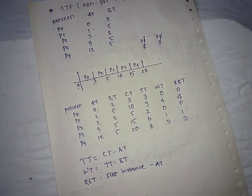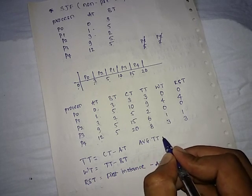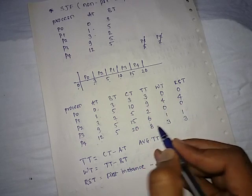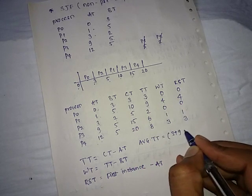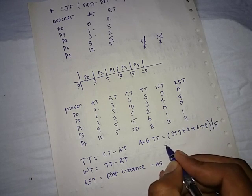Now the formula for average turn around time, that is addition of this column - 3 plus 9 plus 2 plus 6 plus 8 divided by total number of processes, that is 5. This equals 5.6 units.